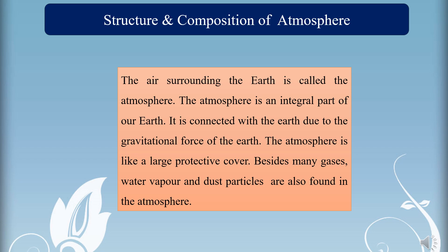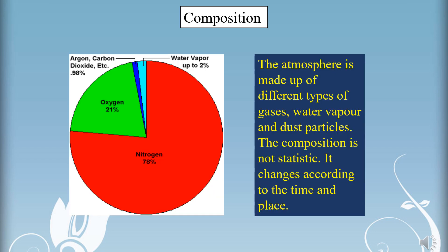The atmosphere is like a large protective cover. Besides many gases, water vapour and dust particles are also found in the atmosphere. Due to all this, all kinds of changes take place in the atmosphere. We will study in this lesson about the composition and structure of the atmosphere. The atmosphere is made up of different types of gases, water vapour and dust particles. The composition is not static; it changes according to time and place.